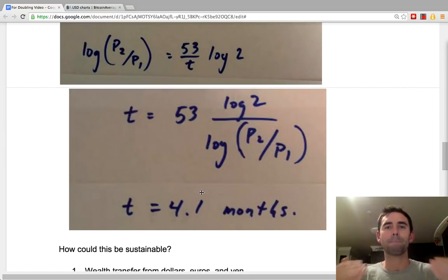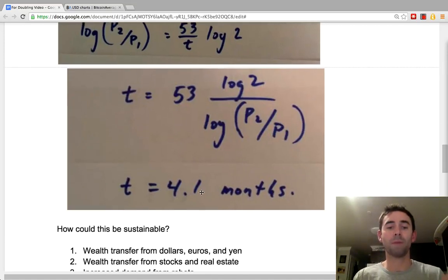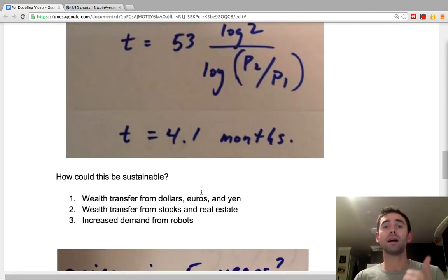One, we're going to see a huge transfer of wealth from dollars, euros, and yen to Bitcoin as more and more people learn about Bitcoin and what makes it an objectively better money than commonly used money. Two, when they see that the stock markets and the real estate markets are going to drop sharply.